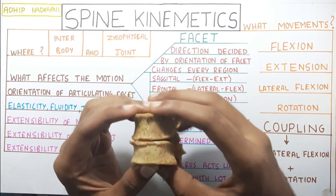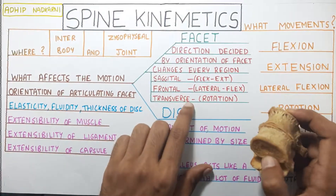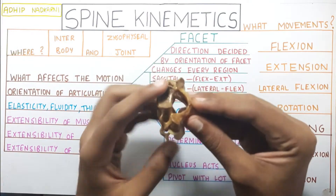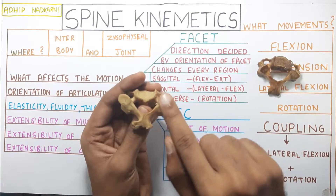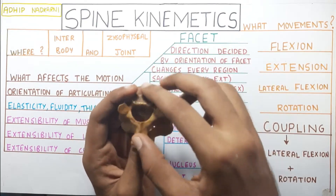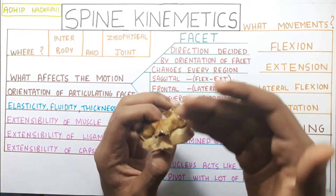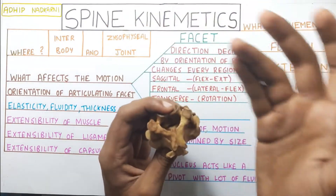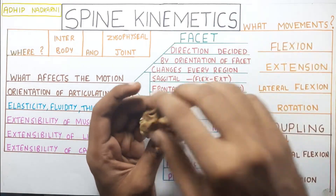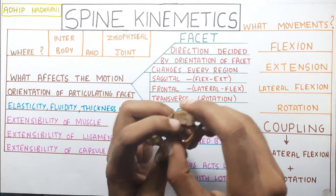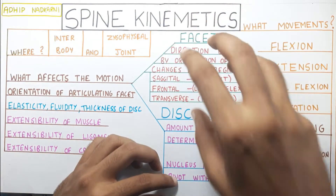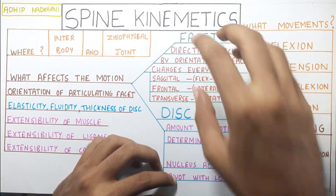If you take the next one — the transverse plane — this is seen in the cervical area. Taking the cervical vertebras and looking at the orientation of the cervical facets, it's in the transverse plane. This is very fascinating because see how the orientation of the facet keeps changing along with the region of the spine, and that's why the movements are so different at different regions. Because the facets are in more of a transverse plane, rotation at the cervical region is the predominant movement.